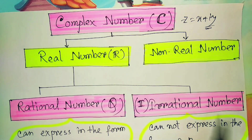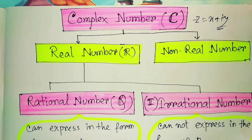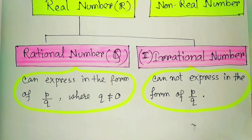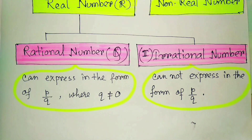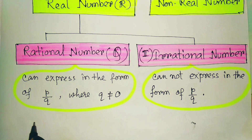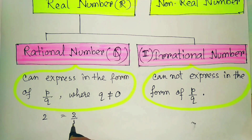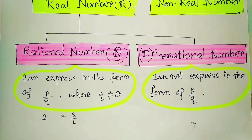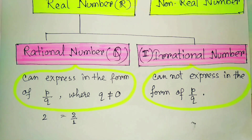Real numbers are part of complex numbers and can be separated into rational and irrational numbers. Rational numbers are those which can be expressed in p/q form — even integers qualify since, for example, 2 = 2/1. Numbers which cannot be expressed in p/q form are irrational numbers.